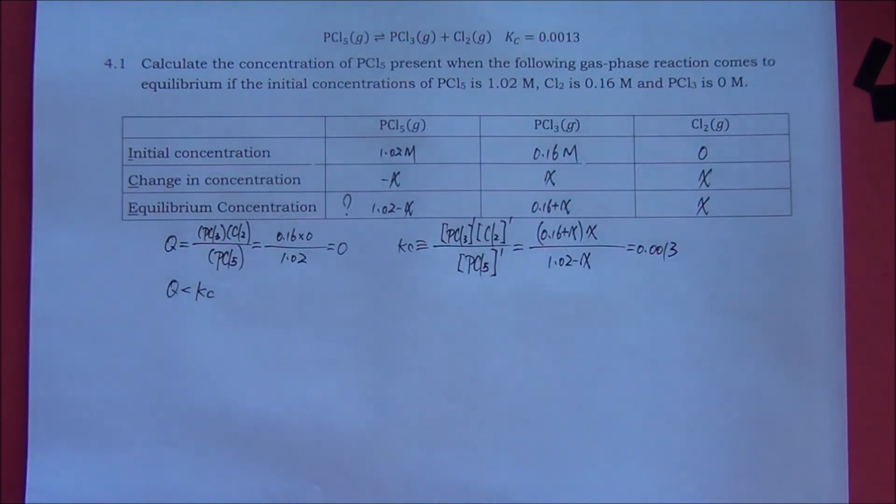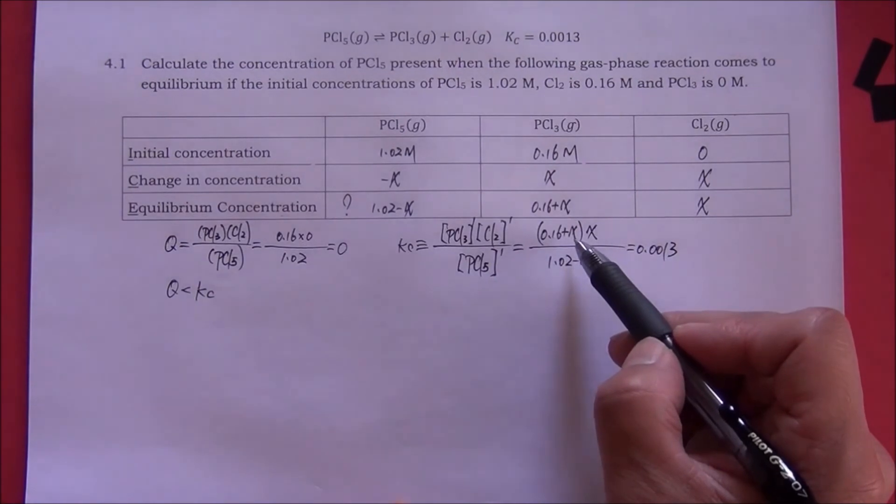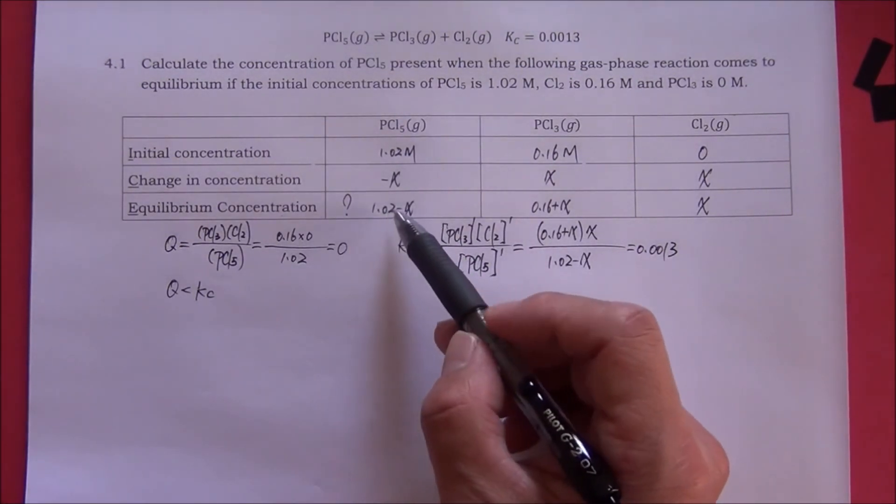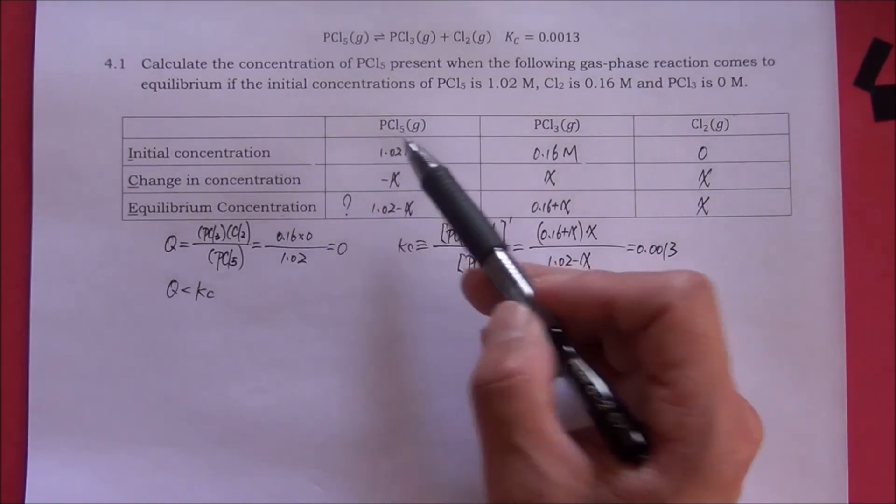In chemistry, at this point, we are done. All we have left is to use the mathematical skills to find x. And then, we plug in the value of x into this expression to find the equilibrium concentration of PCl5. Let me show you the mathematical steps.